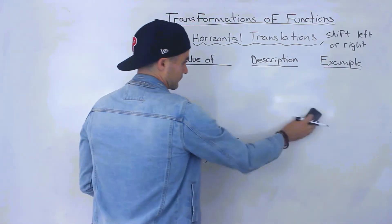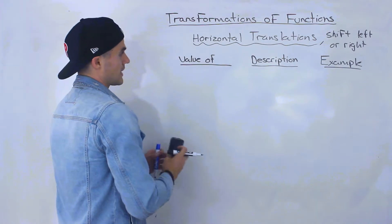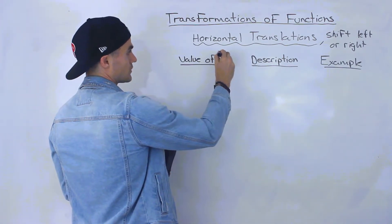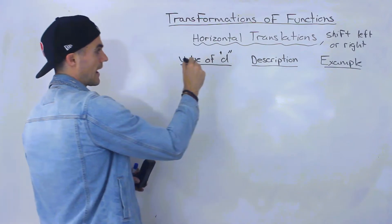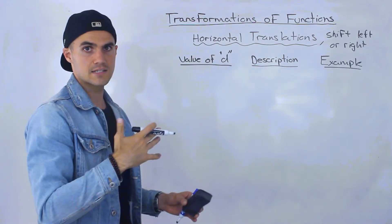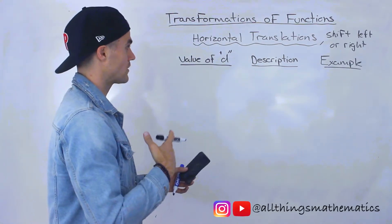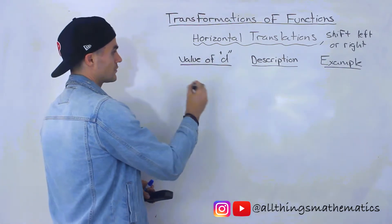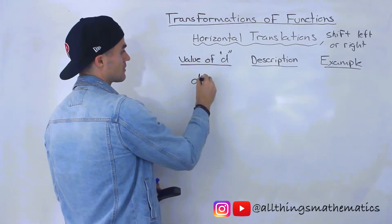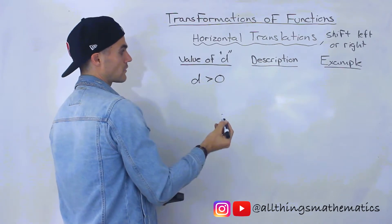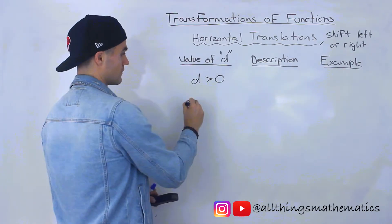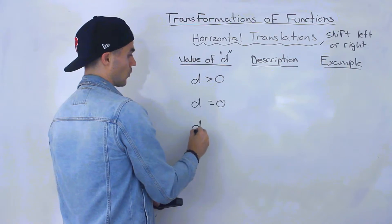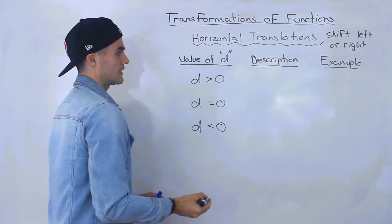So let's go over the cases that the transformation value d can take. There are actually only three cases — a lot less than we dealt with for a and k, which is nice. Either d is going to be greater than 0, equal to 0, or negative.